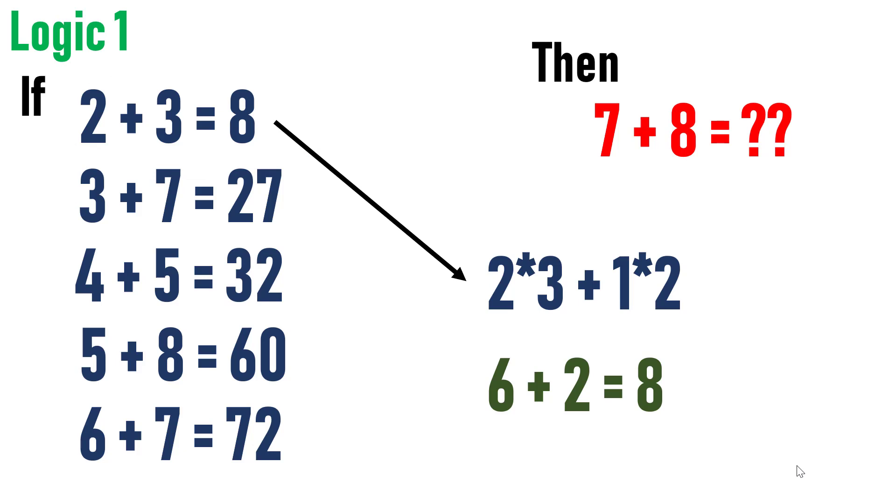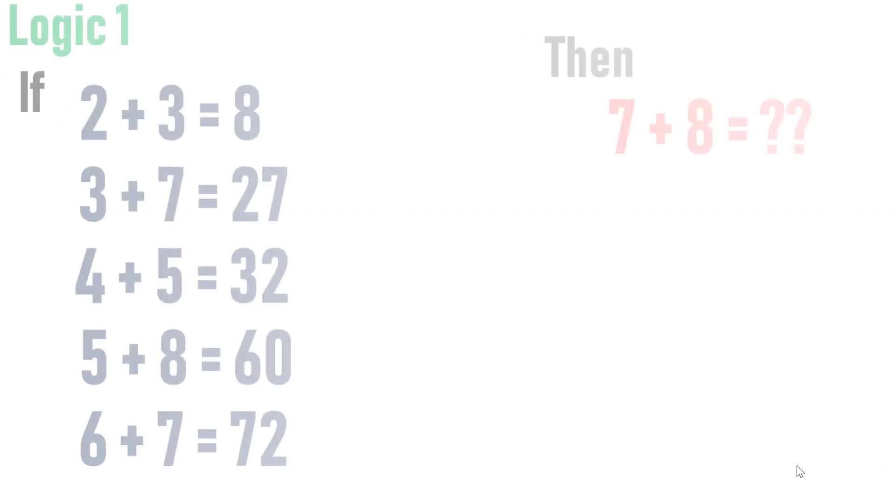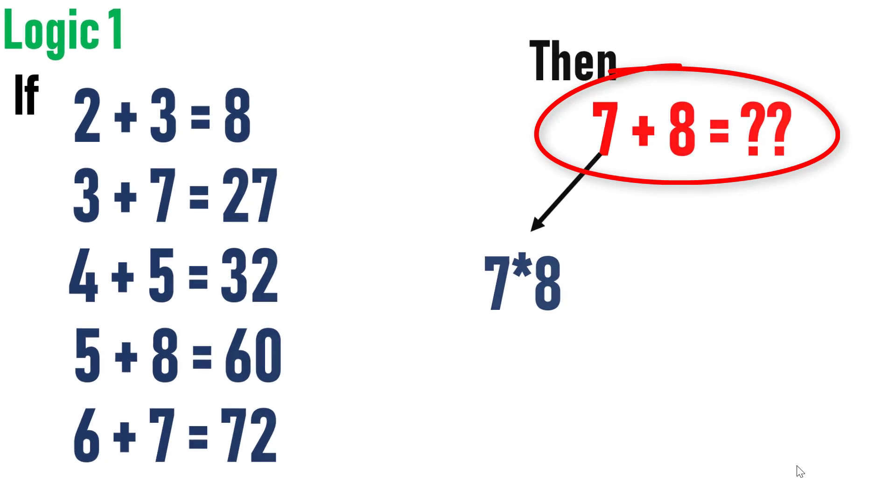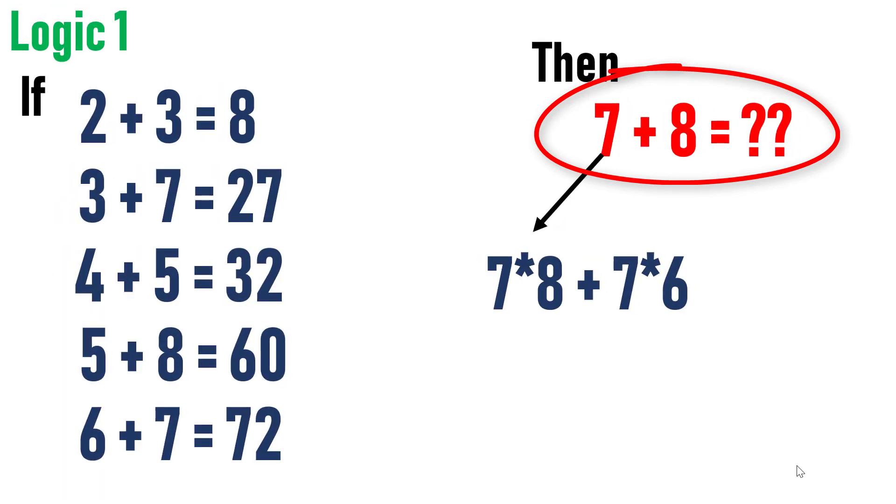So ultimately, the whole idea is to find the result of 7 plus 8. Hence, applying this logic, 7 into 8 is 56 plus 7 into the first number of the previous equation is 6, which is 42. Adding both will yield 98. So this is the solution for this particular puzzle.